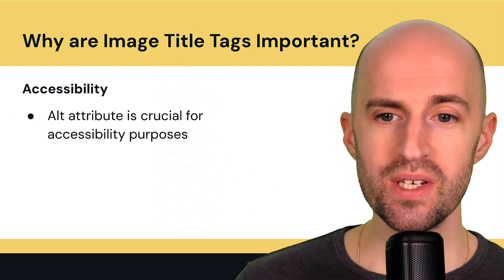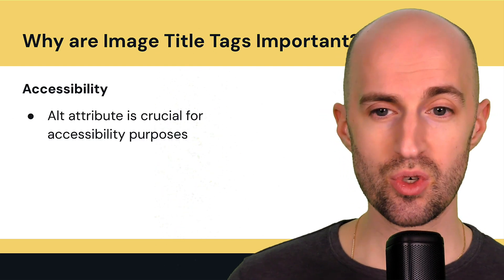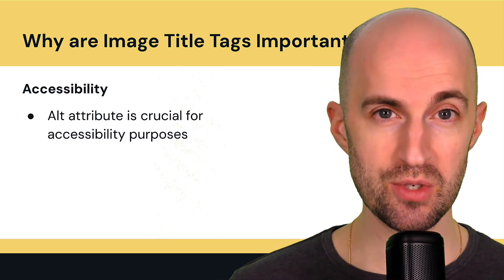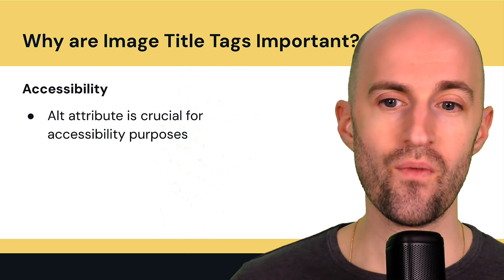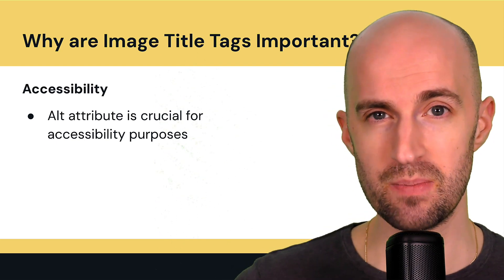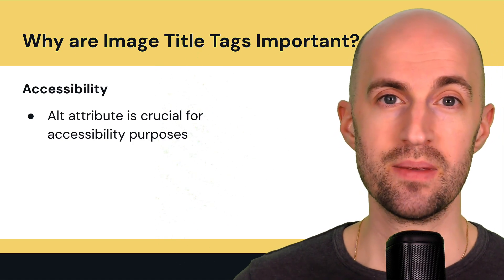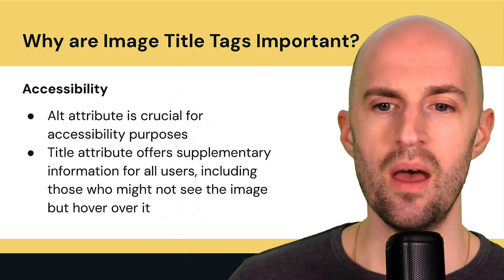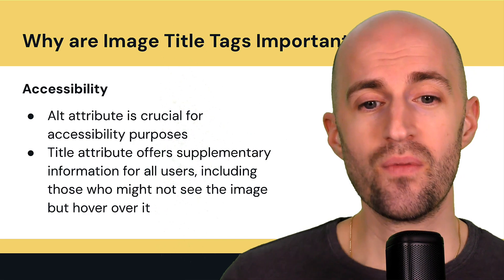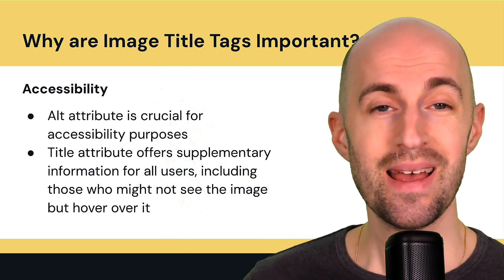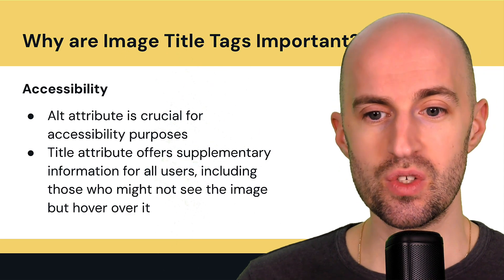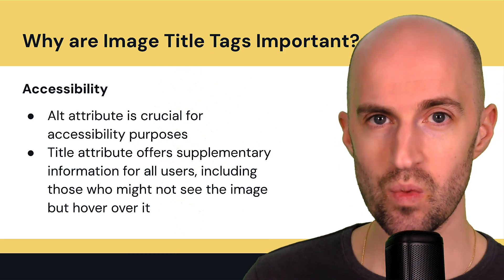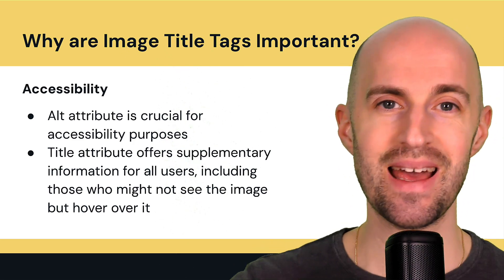Accessibility. The alt attribute — the alternative attribute — that's a different one, so watch that video as well on the Hike SEO YouTube channel. The alt attribute is critical for accessibility purposes because it's used by people with visual impairments to actually understand images through text. A title attribute offers supplementary information for all users, including those who might not be able to see the image and hover over it with their screen reader, so they'll be able to read the title text and the alt text as well.